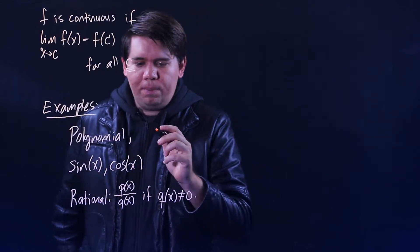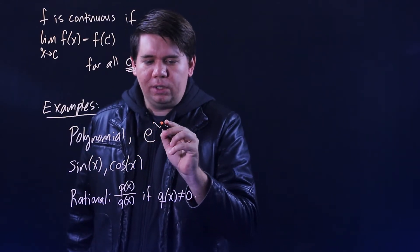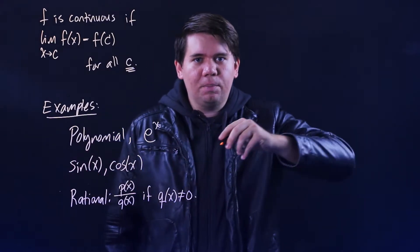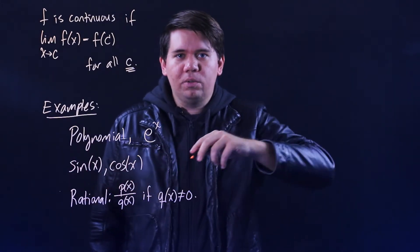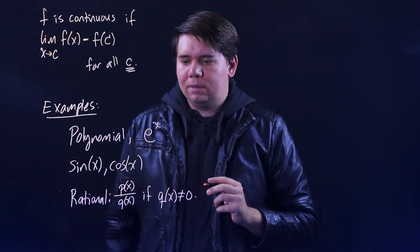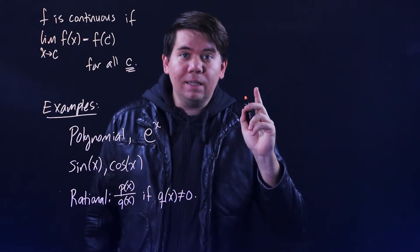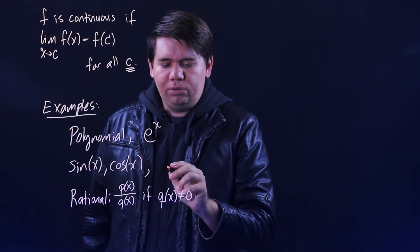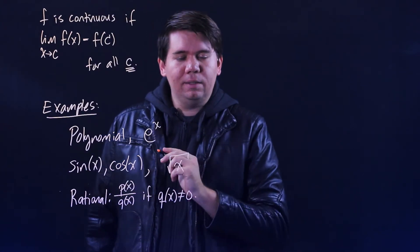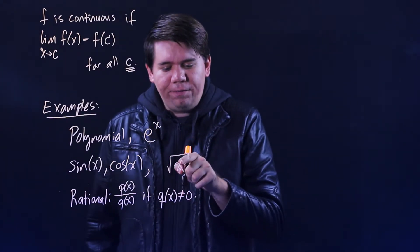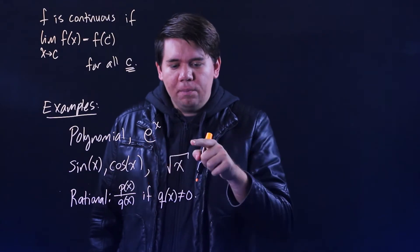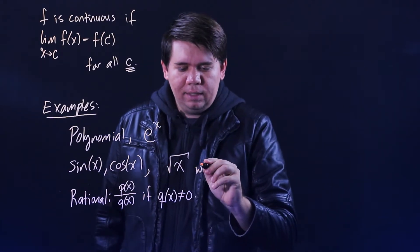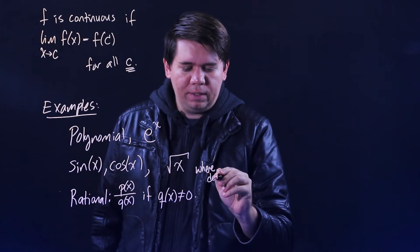And another example would be things like the exponential function, e to the x. Maybe you recall the graph of that is just a nice exponential curve. There's no holes, there's no gaps, there's no jumps in it. Or things like the square root function. If you have something like the square root of x, it's not defined for negative numbers, but wherever it is defined for all the positive numbers, that is continuous. So this is continuous where it's defined.